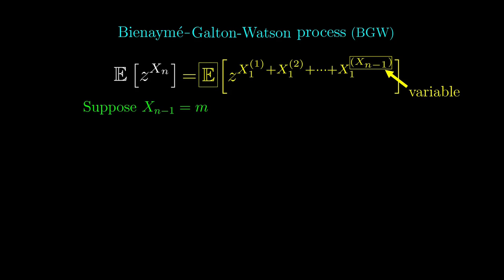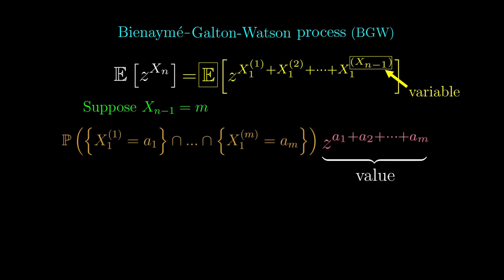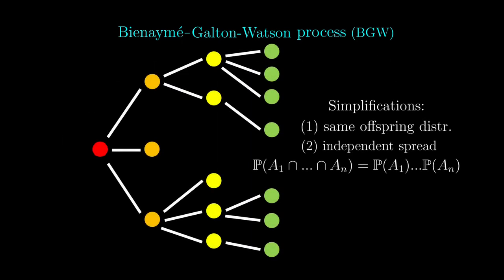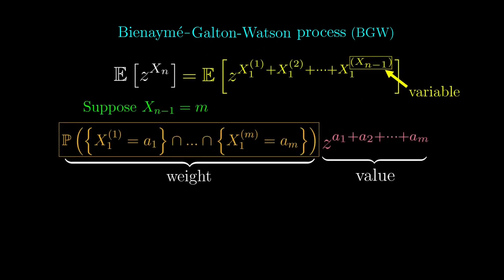Because we are calculating weighted averages, we have to sum up terms of this form, with the weight being the probability that the copies of x1 being a specific value. Because we have assumed all the spreading here is independent, we can apply this more general definition of independence.